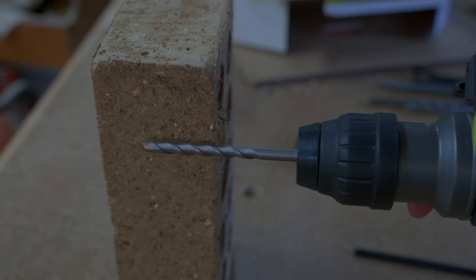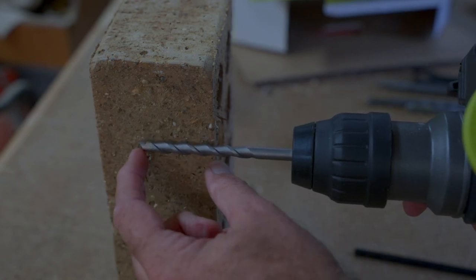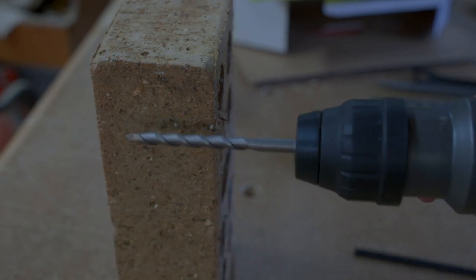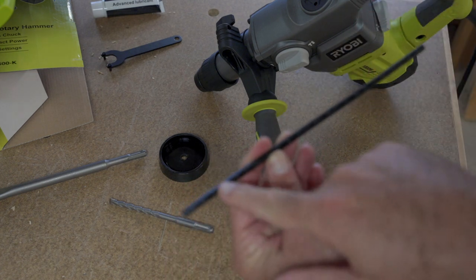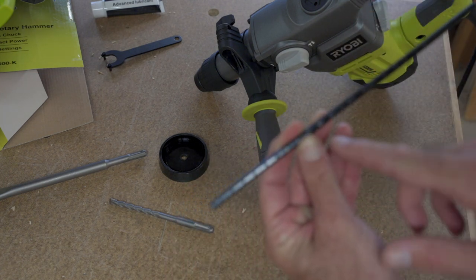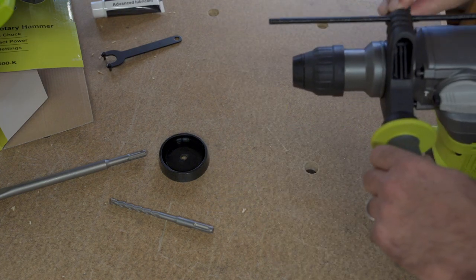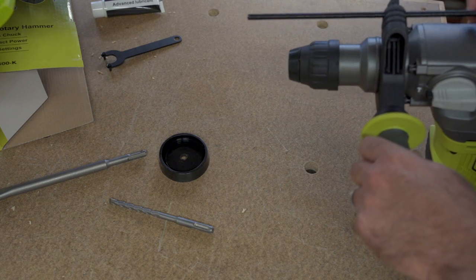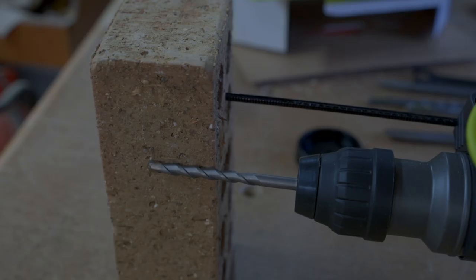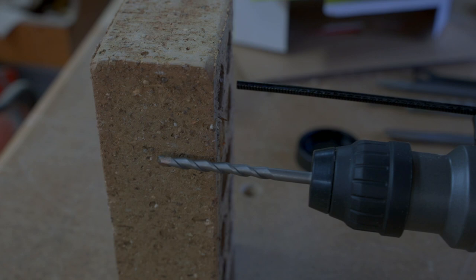The tool comes with a depth gauge so that you can set the depth that you want to drill into. Let's just say you're drilling through this layer of brick and you don't want to go the whole way through. You would just insert this depth gauge bar, which is marked with measurements on it. You just set it to however deep you want the drill to go, tighten it in place, and then when you're drilling that depth gauge will hit the wall and your drill bit won't go any further.